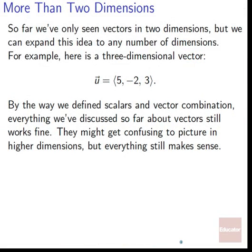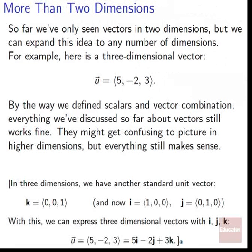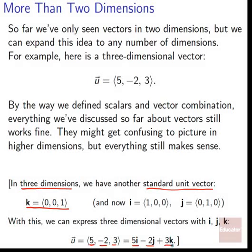We can also talk about more than two dimensions. A three-dimensional vector could be ⟨5, -2, 3⟩ — we just keep putting in more components. Everything we've discussed still works by the same definitions of scalars and vector combination. It's hard to picture higher than three dimensions, but the algebra still makes sense. For three dimensions, there's a third standard unit vector k equals ⟨0, 0, 1⟩, so ⟨5, -2, 3⟩ becomes 5i minus 2j plus 3k.